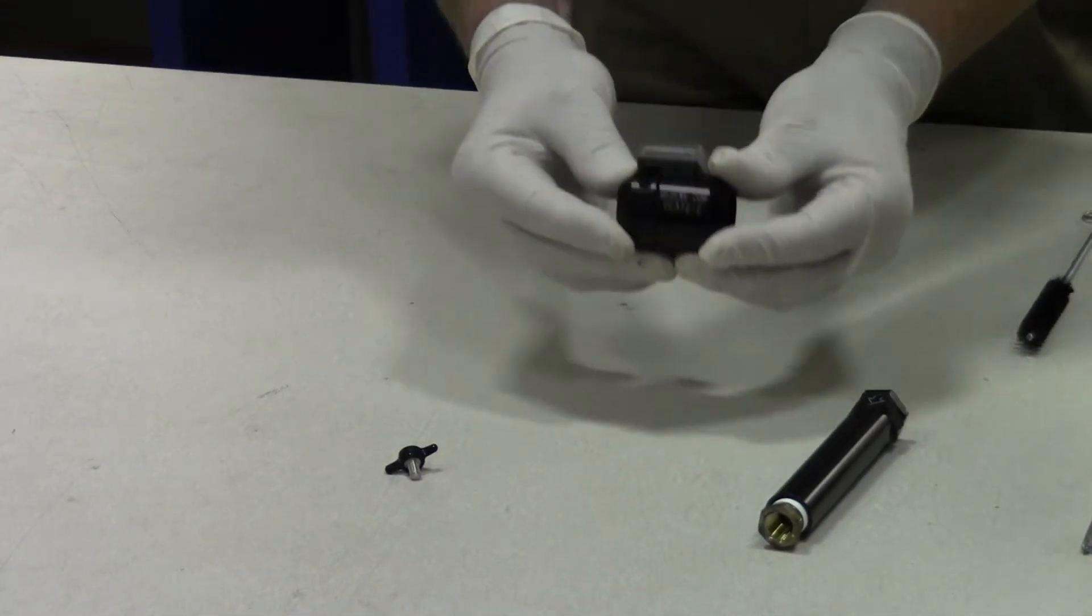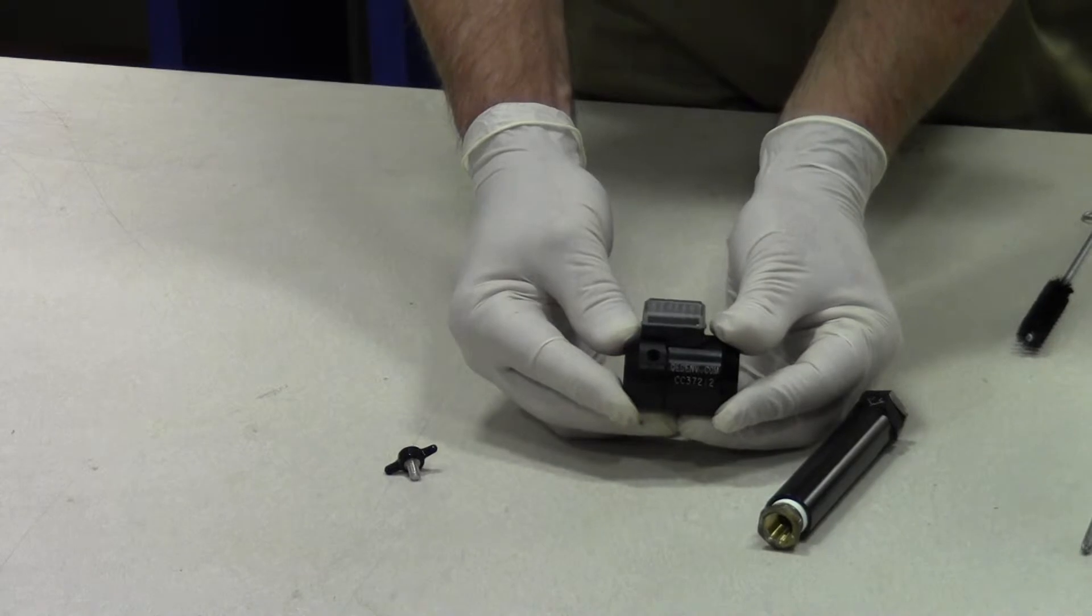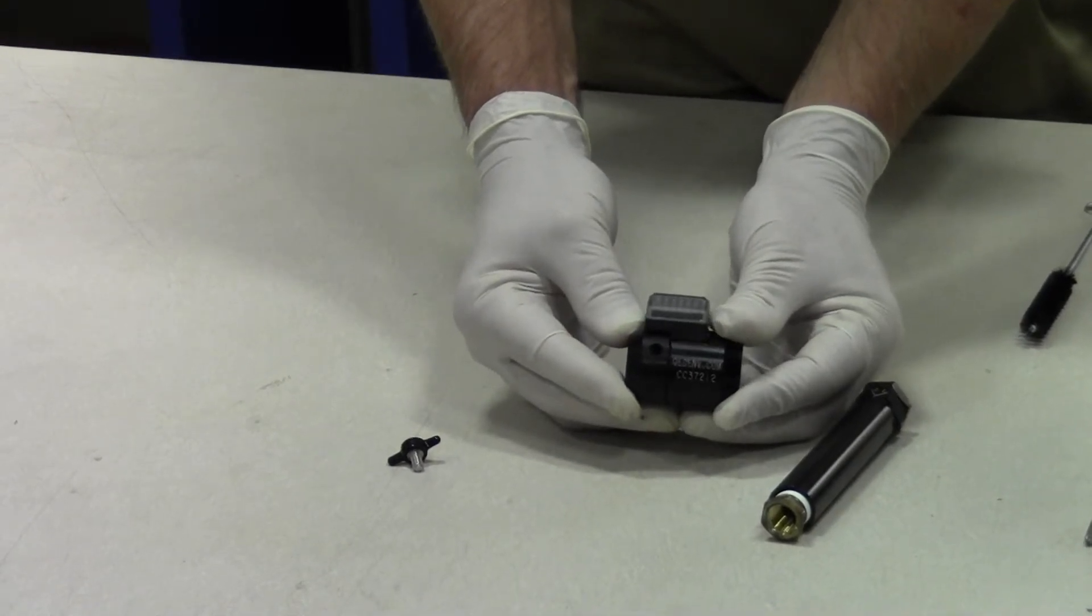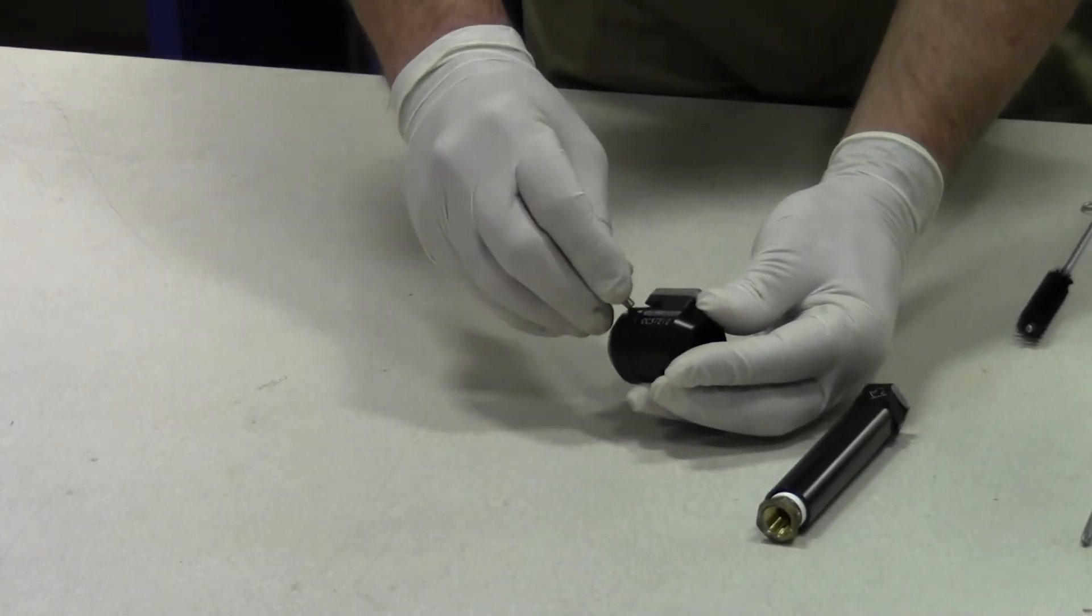Align the holes on the display seat and display sleeve and insert the thumb screw only far enough to hold the assembly together.